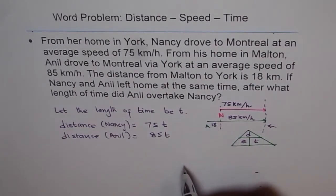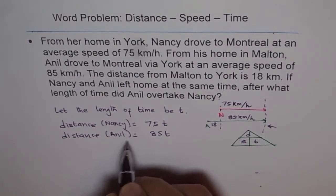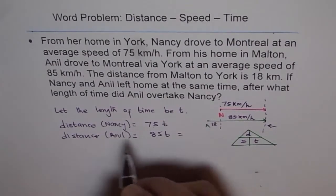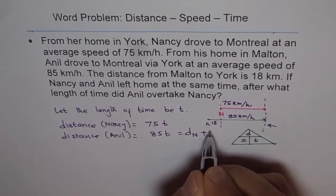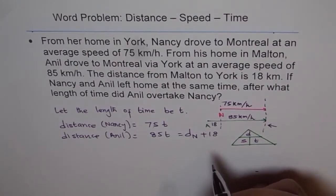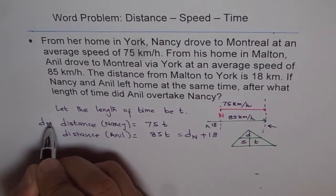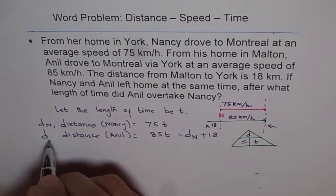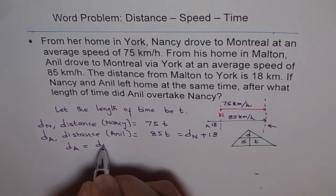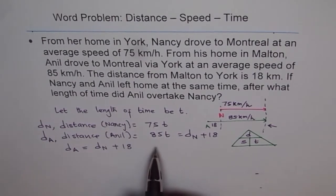So that is the key relation: the distance covered by Anil is equal to the distance covered by Nancy plus 18. Let me write the distance covered by Nancy as dN and the distance covered by Anil as dA. We know that dA equals dN plus 18 kilometers, and from here we can equate and find the answer.